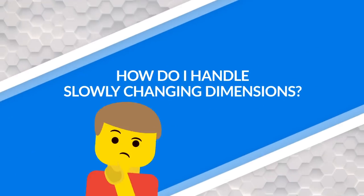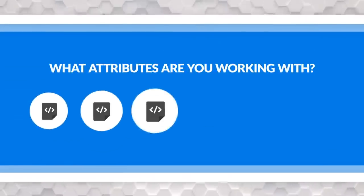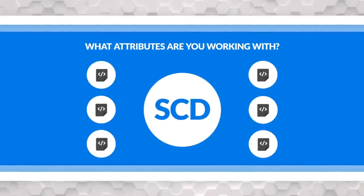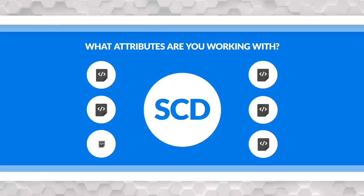Slowly changing dimensions — it's a video that's been in the making since last year. I'm always getting questions about how to handle slowly changing dimensions. It depends on what type of attributes you're working with on your slowly changing dimension, and the most common response is type two.